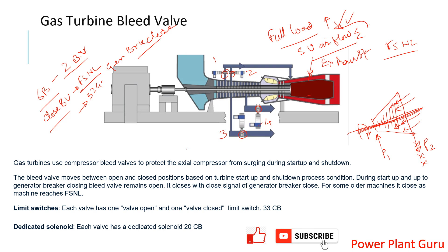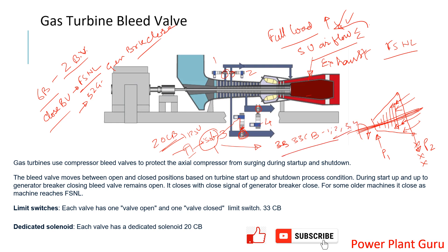Looking at how the valve operates: the solenoid valve is SOV 20CB. Air is supplied from the turbine itself, passing through a filter to a solenoid valve, which receives a 125-volt DC electric signal from the turbine controller. This pneumatic system actuates a plunger to operate the bleed valve. Once operated, position feedback is seen on 33CB — contacts one, two, three, four — and that is how the entire system works.